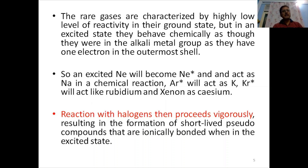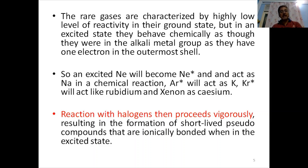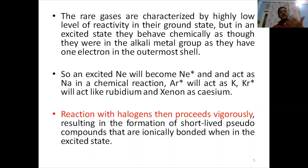Rare gases are characterized by a very low level of reactivity in their ground state, but in an excited state they behave chemically as though they were in the alkali metal group, having one electron in the outermost shell. For example, excited neon acts like sodium, excited argon acts like potassium, excited krypton like rubidium, and excited xenon behaves like cesium. Therefore, their reactions with halogens are very vigorous, resulting in the formation of short-lived pseudo-compounds that are ionically bonded in the excited state.